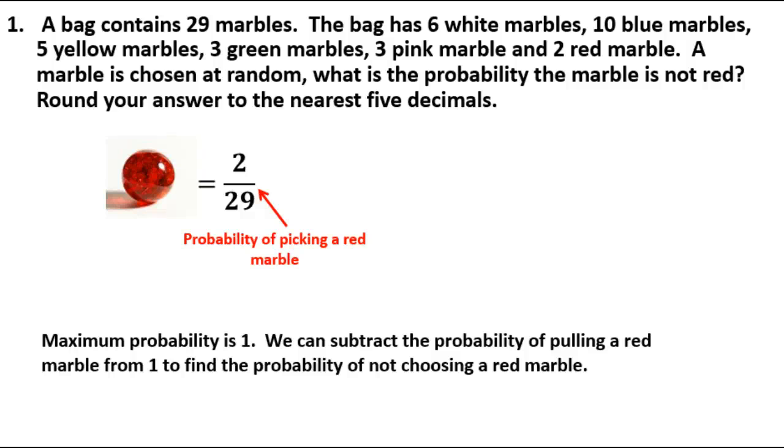So let's do that now. We'll take 1 minus 2 over 29, and we can just plug that into our calculator. 1 minus 2 over 29. And then the biggest thing is we get to round the nearest five decimals. We'll plug that in. If we round the nearest five decimals, it should give you 0.93103.